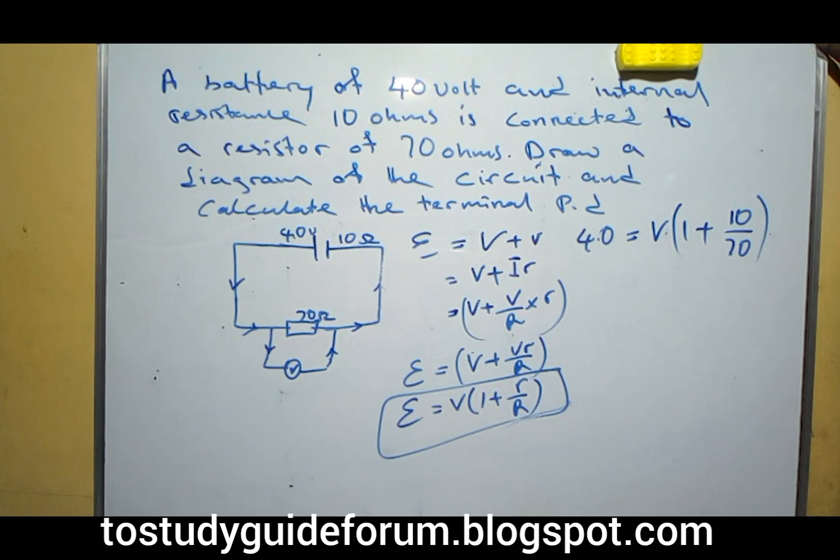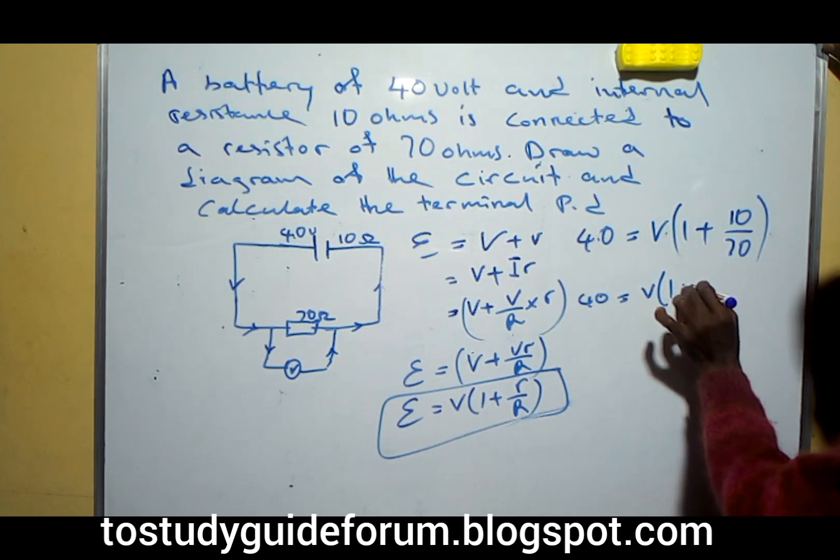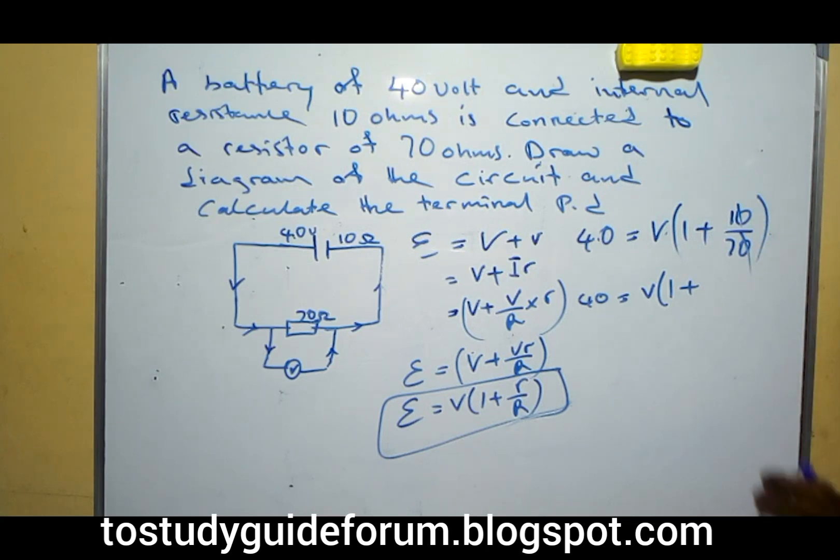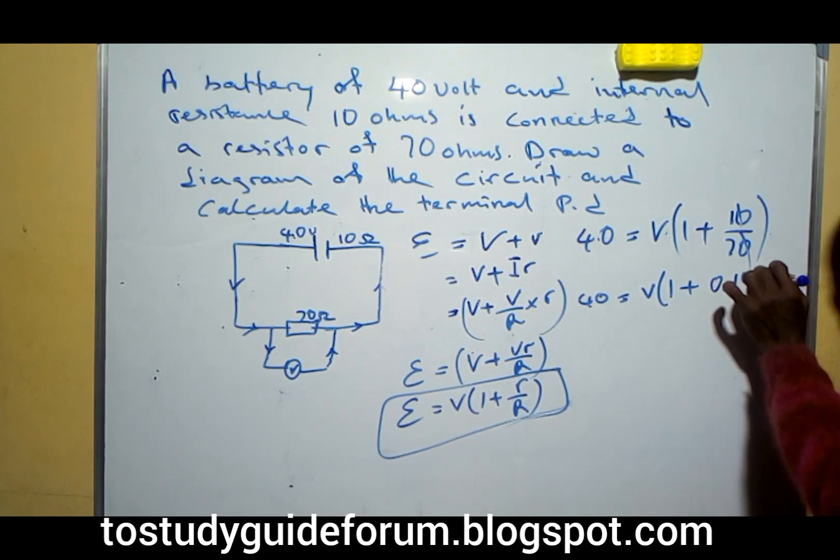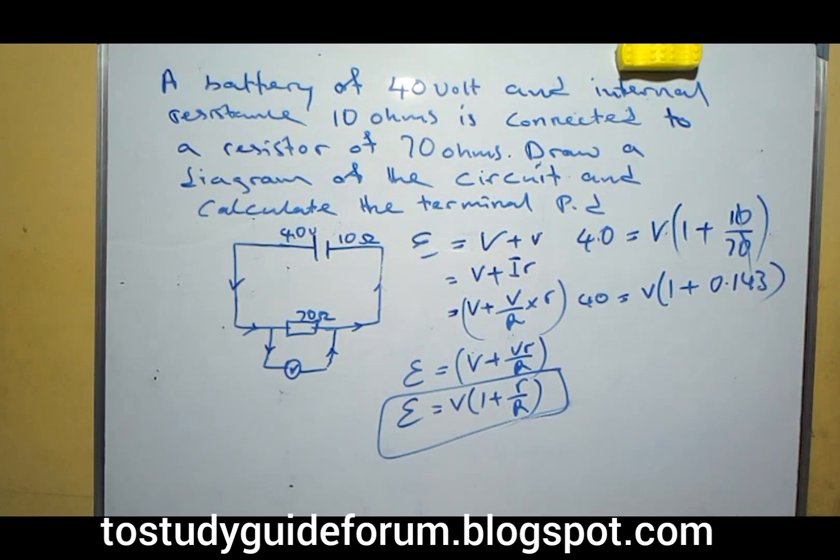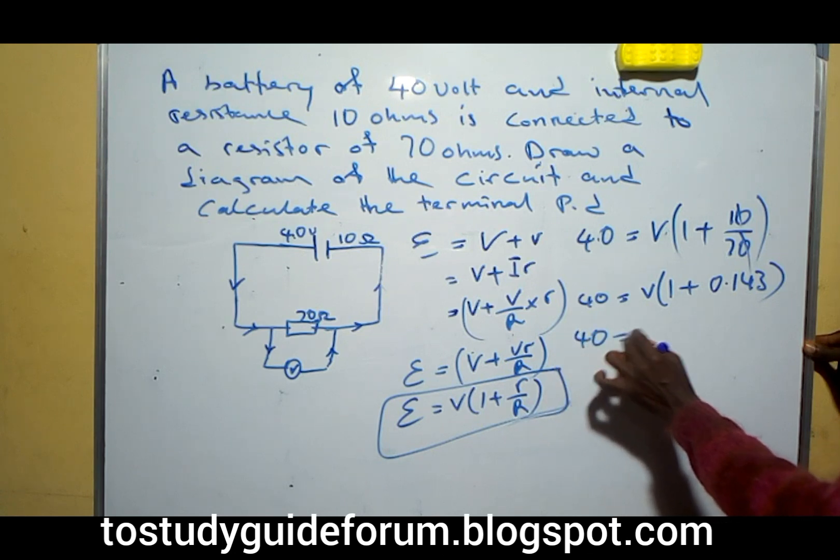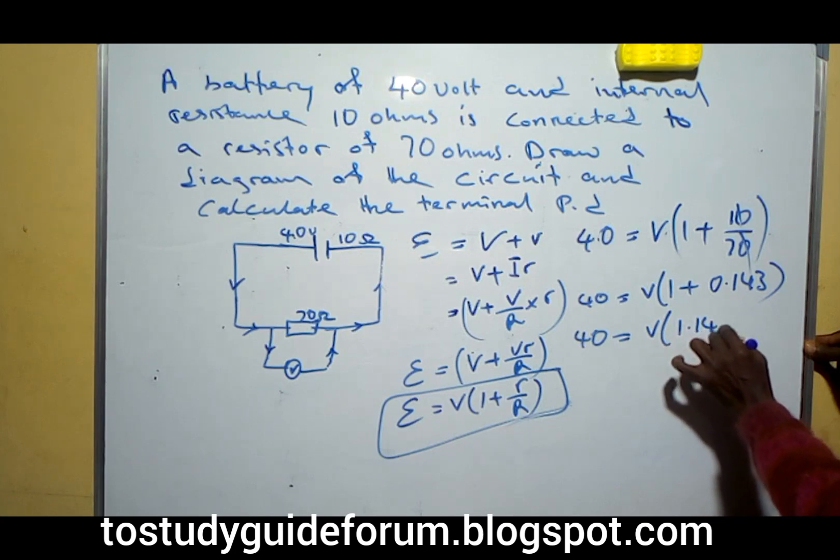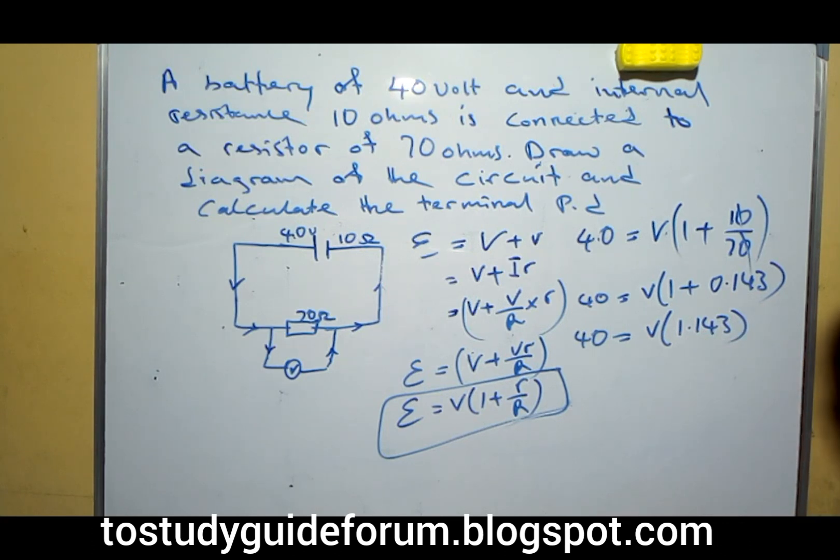So the next thing we're going to do here is, we can cancel out. We have 40 equal to V bracket 1 plus, I think this one can go, we can cancel it out, if we cancel it out, we have 0.143 approximately. So the next thing we are going to do is to sum up, if we add up this, we will have 40 is equal to this plus that, we have 1.143, so V multiply 1.143.